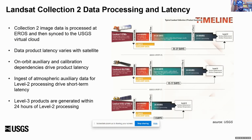Landsat Collection 2 data processing: we reprocessed the full Landsat archive in late 2020. Landsat 9 data is only processed into Collection 2. We process the data on-premises at EROS and then sync it to the USGS virtual cloud. We're currently in the process of decommissioning Landsat 7 — it's very low on fuel and its orbit has been drifting for years. We'll be lowering the orbit into a servicing orbit; NASA will be running an on-orbit servicing demonstration mission in a couple of years — the first attempt to refuel a satellite on orbit. Landsat 7 has been operating for 23 years.